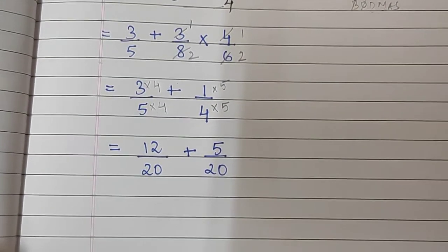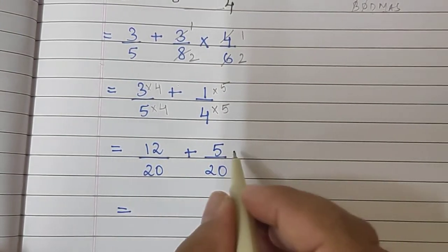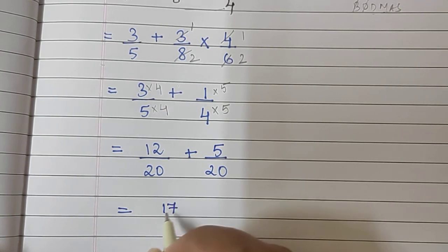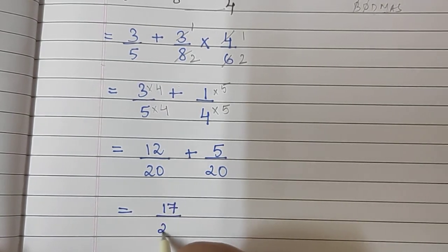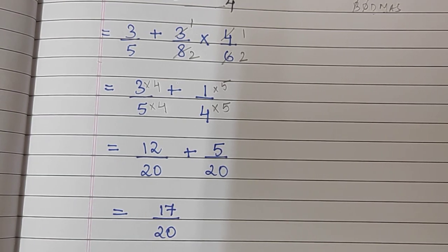Now I can add them easily. 12 plus 5 will be 17 upon 20. So our answer will be 17 upon 20. With this, we end Practice Set 25 and also our chapter on operations on rational numbers. Thank you.